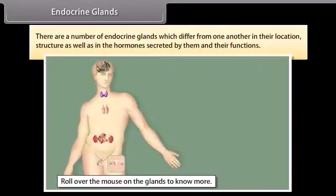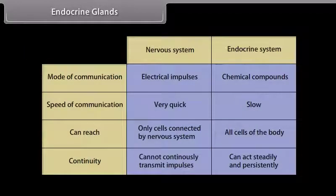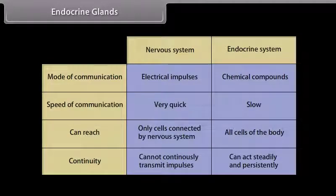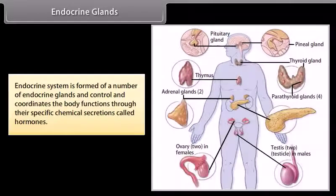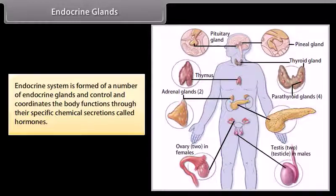There are a number of endocrine glands which differ from one another in their location, structure, as well as in the hormones secreted by them and their functions. The endocrine system is formed of a number of endocrine glands and controls and coordinates the body functions through their specific chemical secretions called hormones.